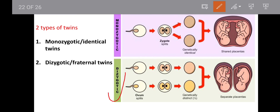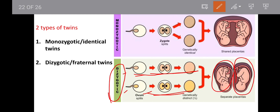In the case of dizygotic twins, two different ova are present. These two different ova are fertilized by two different sperm. So they are different — the two different ova will be different. They have different development.